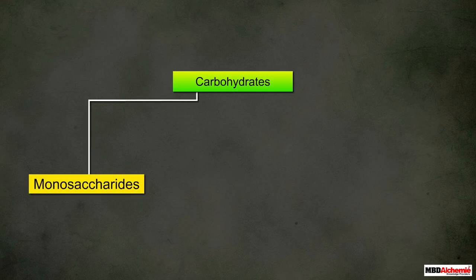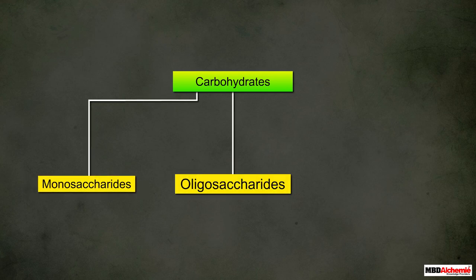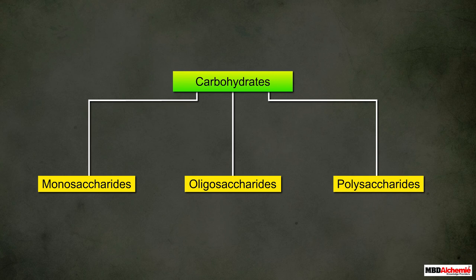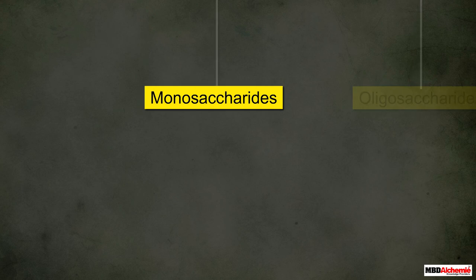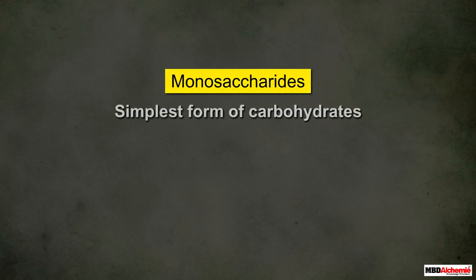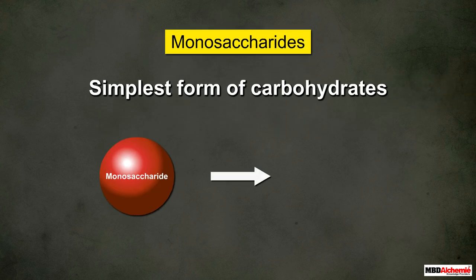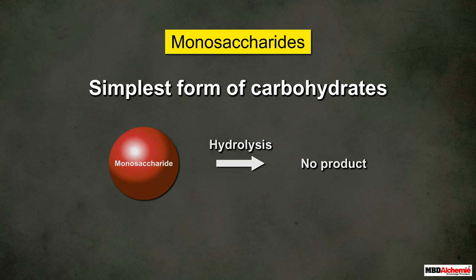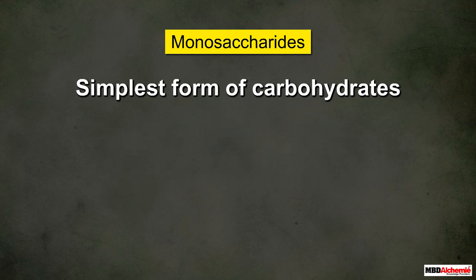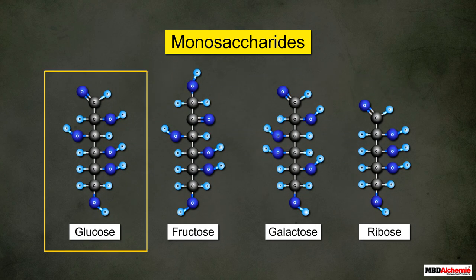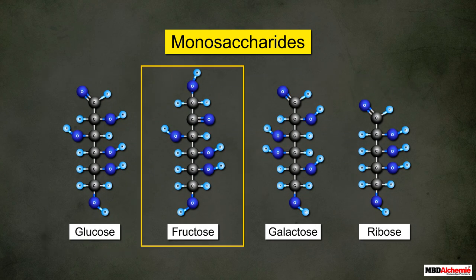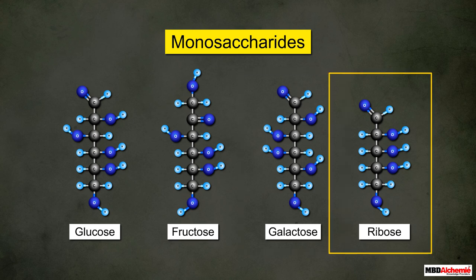Now, based on the products given out during their hydrolysis, carbohydrates can be classified as monosaccharides, oligosaccharides, and polysaccharides. Monosaccharides are the simplest form of carbohydrates; they cannot be hydrolyzed into simpler compounds. Some common examples of monosaccharides are glucose, fructose, galactose, and ribose.